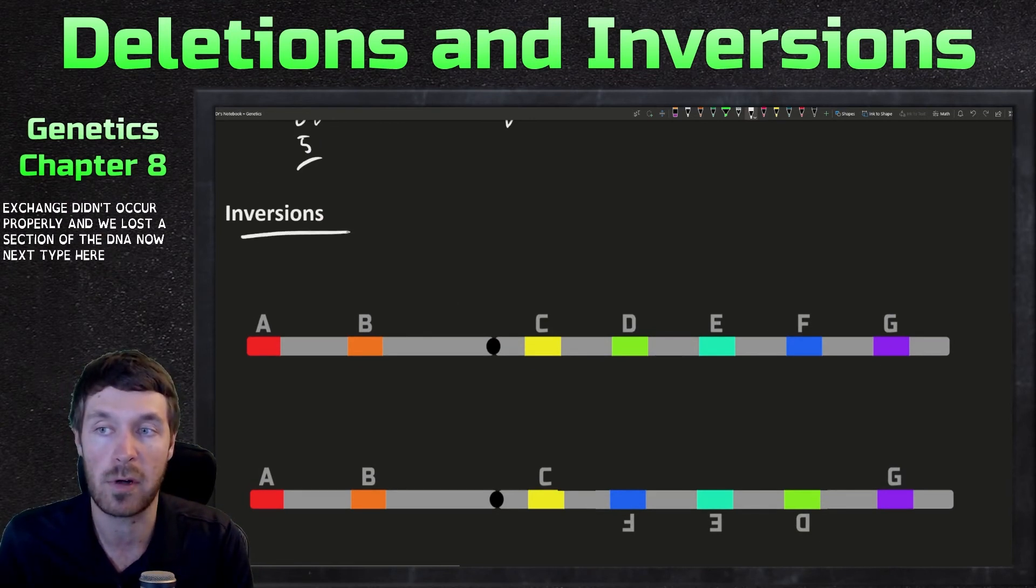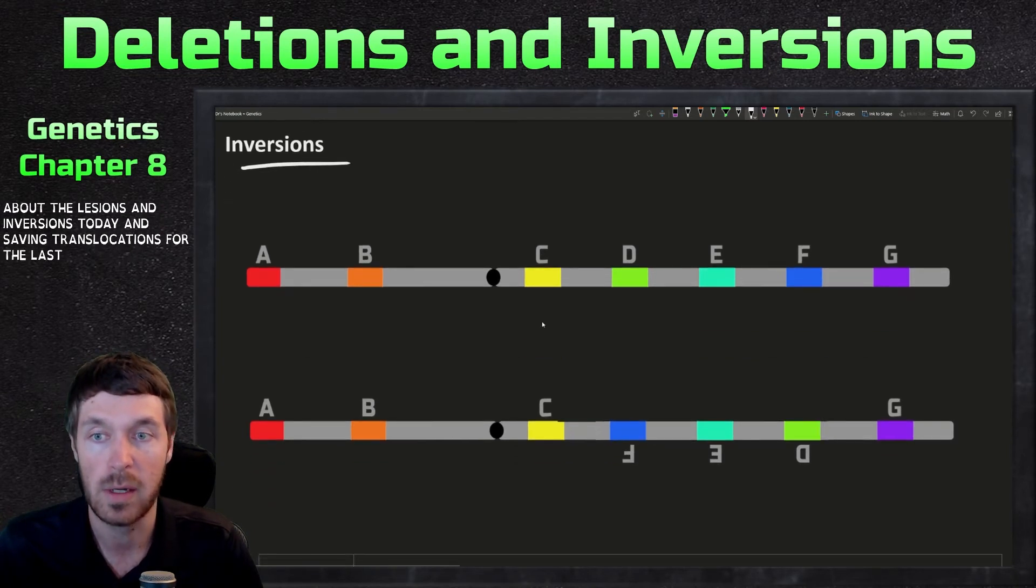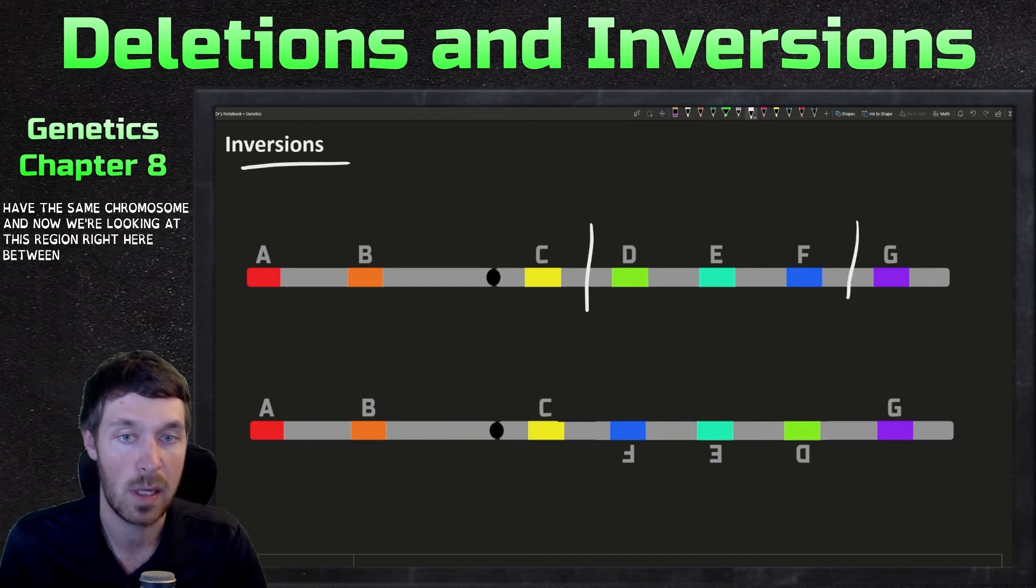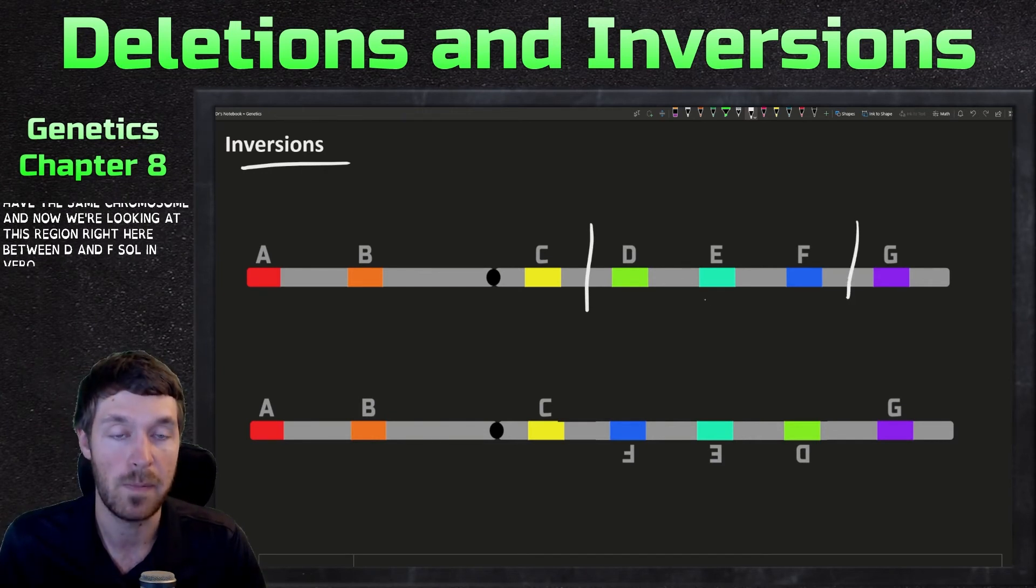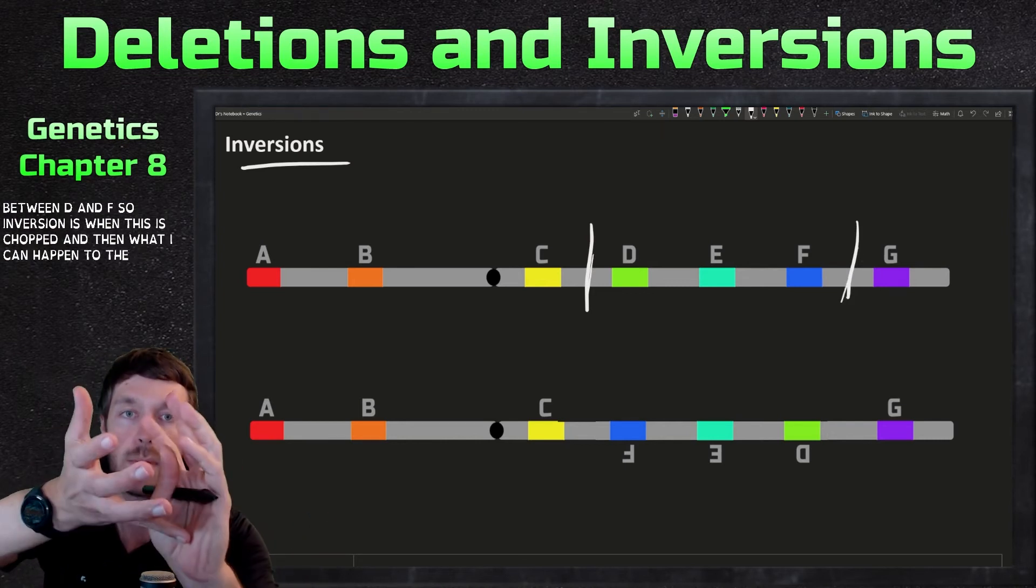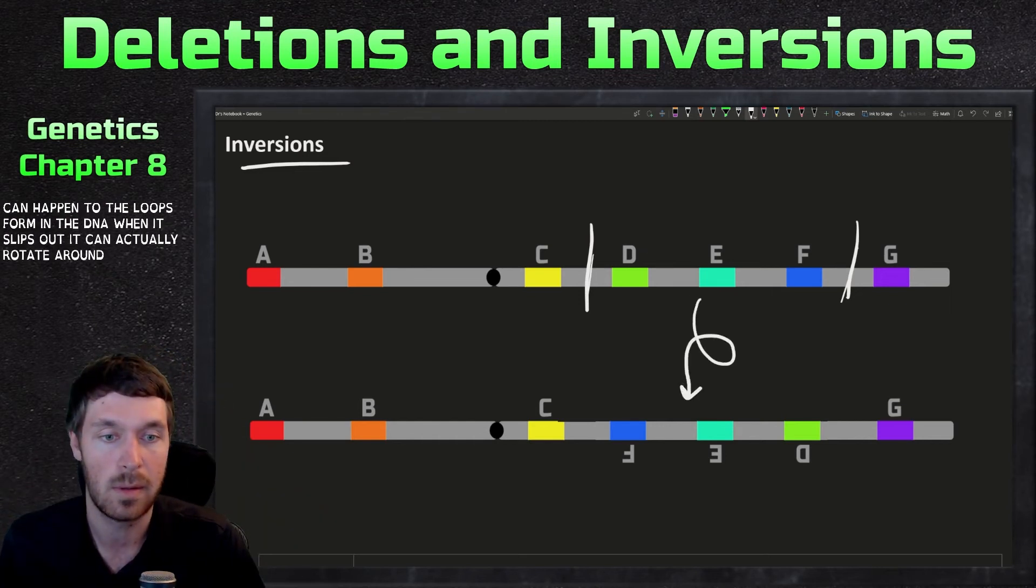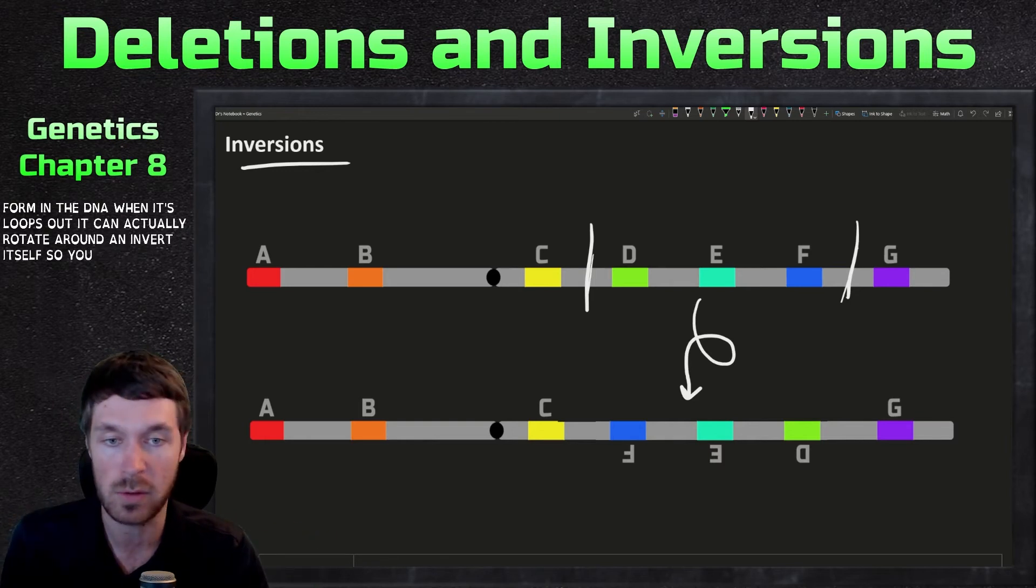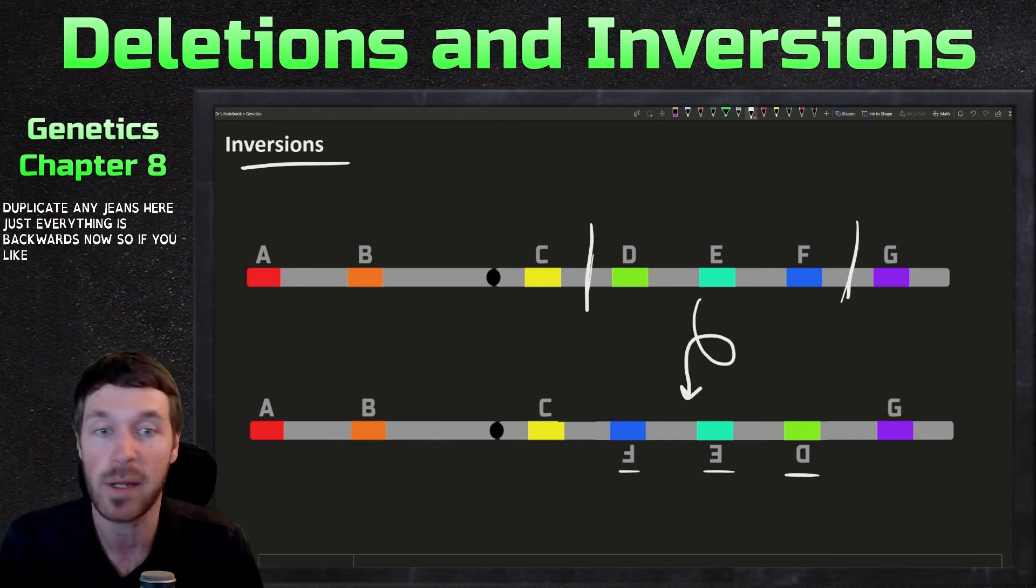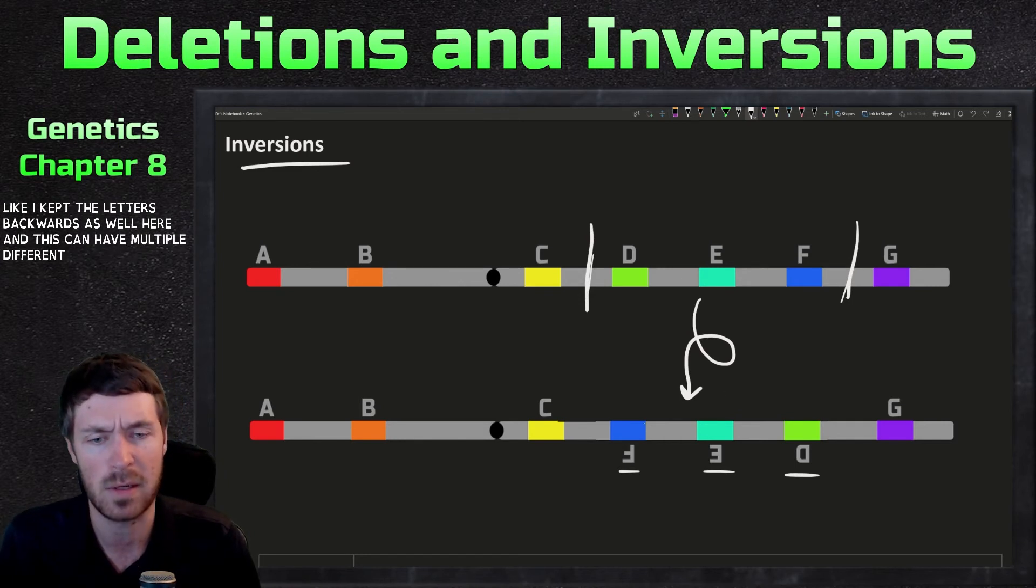Now, next type here are inversions. Remember we're talking about deletions and inversions today and saving translocations for the last one. So here we have the same chromosome and now we're looking at this region right here between genes D and F. So an inversion is when this is chopped and then what can happen is the loops form in the DNA. When this loops out, it can actually rotate around and invert itself. So you don't duplicate any genes here, just everything is backwards now. So if you look, I kept the letters backwards as well here, and this can have multiple different effects.